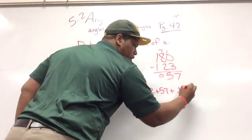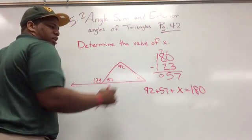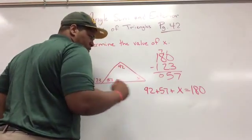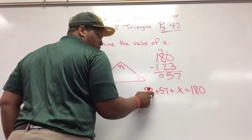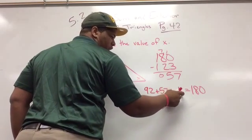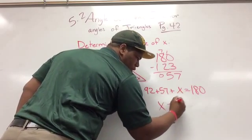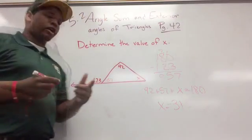Because all the angles on the inside are 180, and I know that 92 plus 57 plus x equals 180, and my x is going to equal 31.